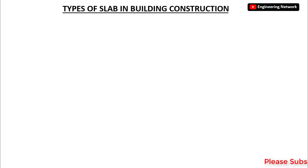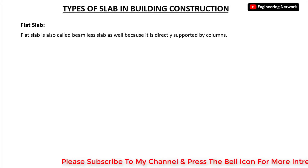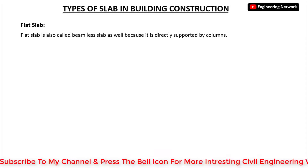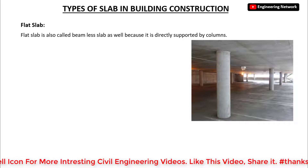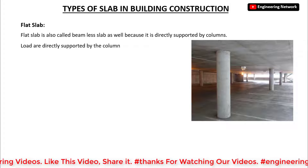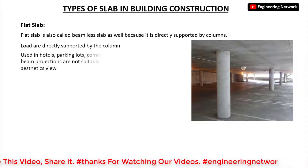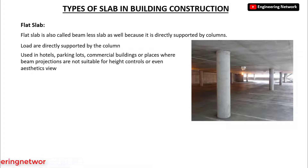The next type is the flat slab, which is also called a beamless slab because it is directly supported by columns, as you can see on your screen. Loads are directly transferred to the columns. Flat slabs are commonly used in hotels, parking lots, commercial buildings, or places where beam projections are not suitable for height control or aesthetic reasons.